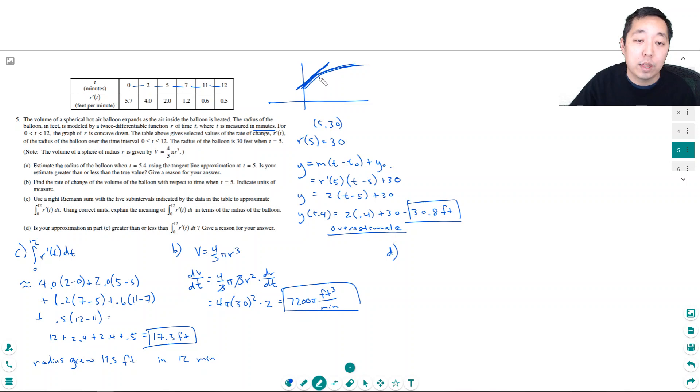In part d, is the approximation greater than or less than the actual value? It has to do with the fact that it's concave down and increasing. When I use a right endpoint, I'm going to overestimate the area because my rectangles are taller. Actually no, this is an underestimate, sorry. This is a plot of r of t - r prime of t is decreasing. When I use the right endpoint over this interval, it's smaller, right? It went from 5.7 to 4, so it's shrinking.